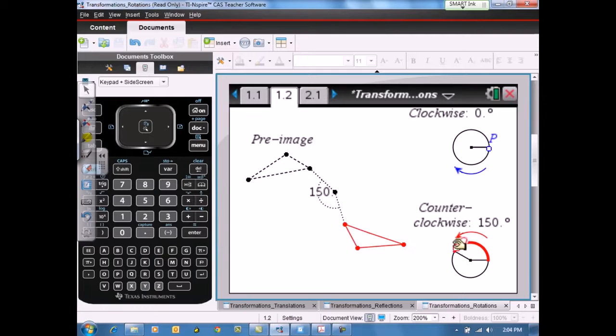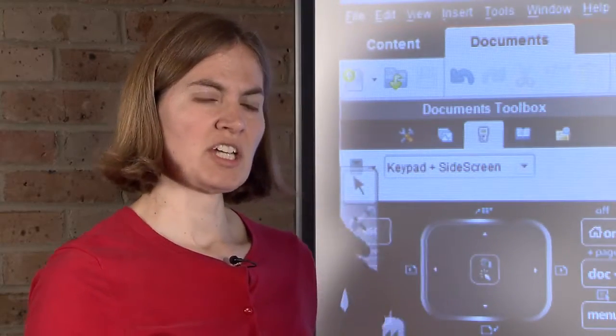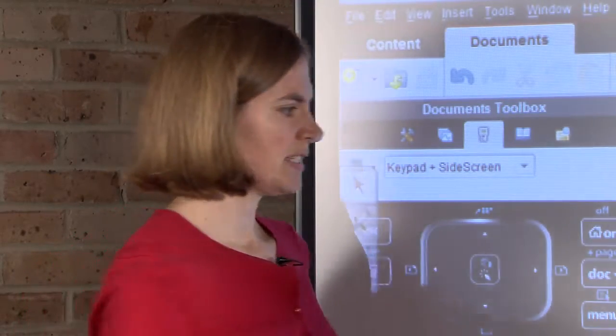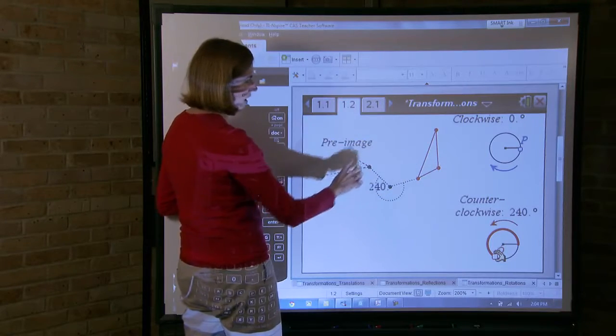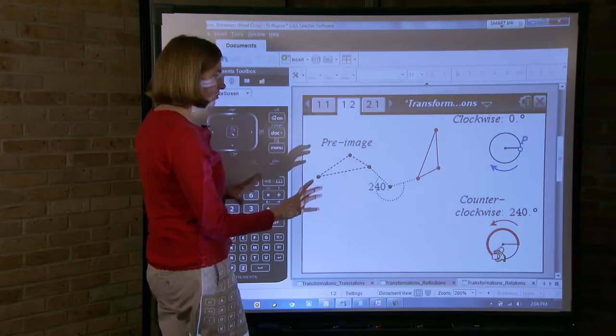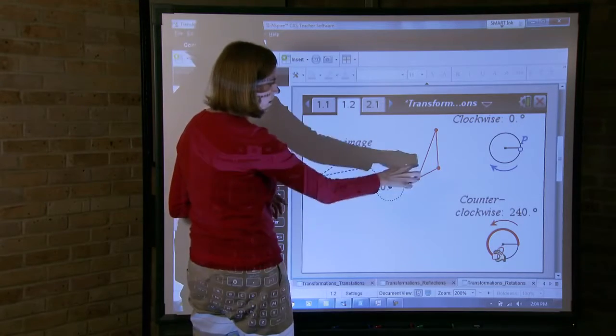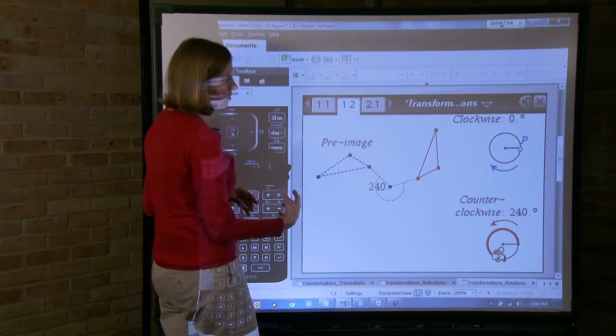So we think about what happens as we rotate the pre-image about the point a certain number of degrees. This is another where thinking Common Core transformations and Common Core defining of congruence that I actually send the document so that the triangle and the pre-image and the image are separate when they start so that they can think about what they have to do to map one onto the other and begin to think about congruence that way.